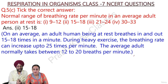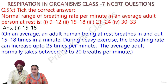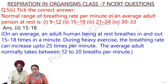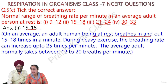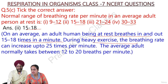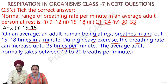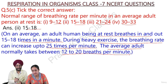The normal range of breathing rate per minute in an average adult person at rest is — 1. 9 to 12, 2. 15 to 18, 3. 21 to 24, or 4. 30 to 33? The answer is 15 to 18. An adult human being at rest breathes in and out 15 to 18 times per minute. During heavy exercise, the breathing rate can increase up to 25 times per minute. The average adult normally takes between 12 to 20 breaths per minute.